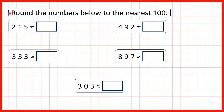We need to round the numbers below to the nearest hundred. First, we have 215. Because we're rounding to the nearest hundred, the first thing we do is find our hundreds digit. That's the first digit of a three-digit number because we have ones, then tens, then hundreds. Then we underline the digit to the right — our tens digit — because when rounding to the nearest hundred, it's the tens digit that decides whether we round up or down.